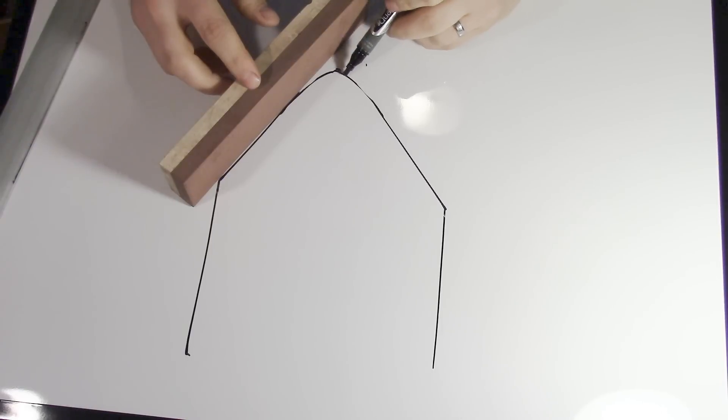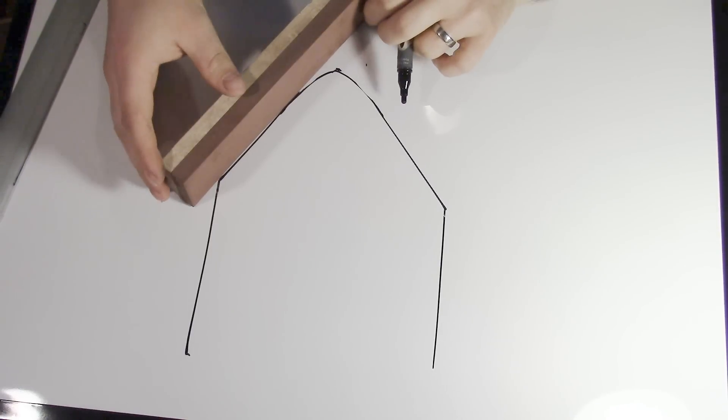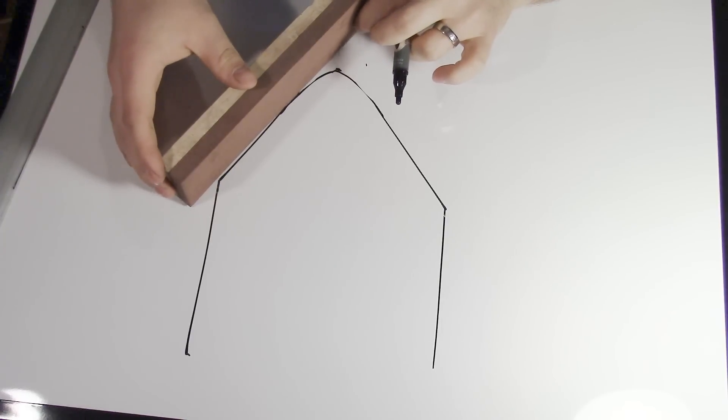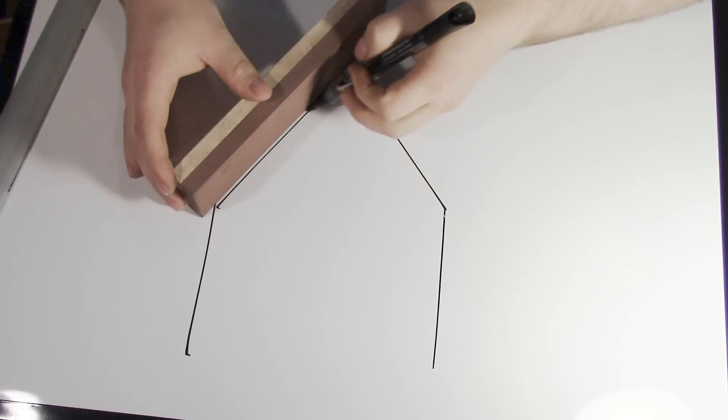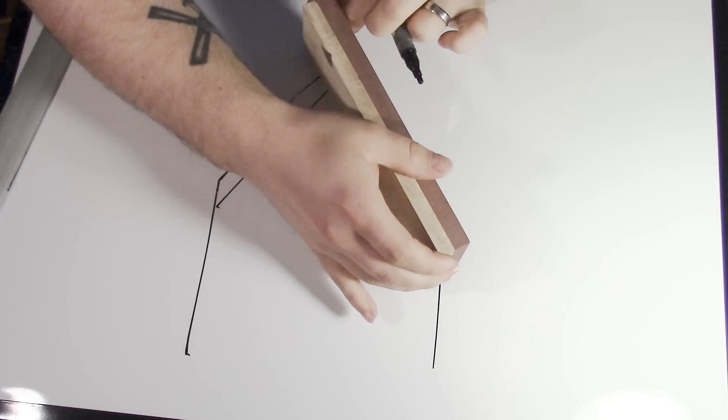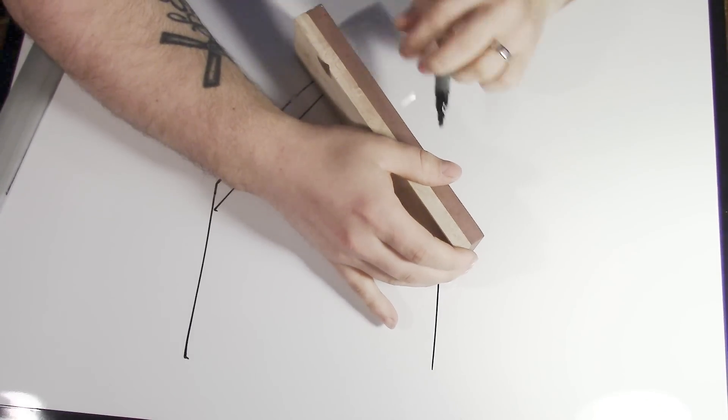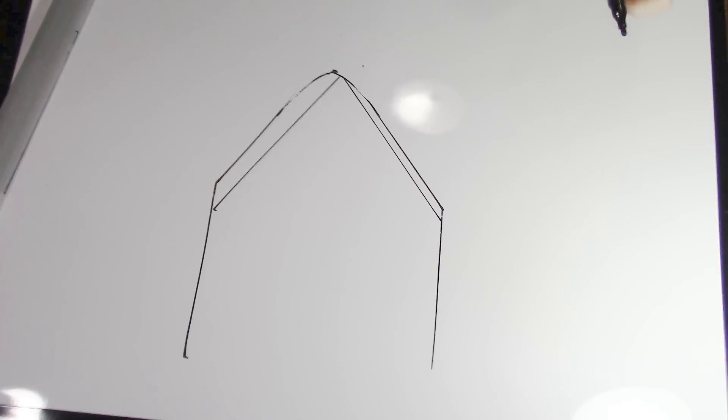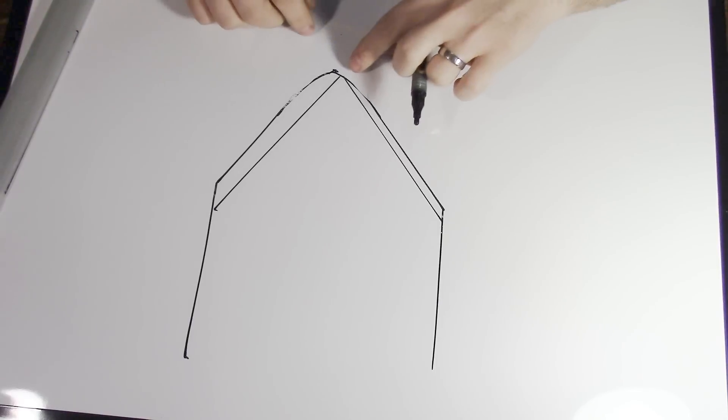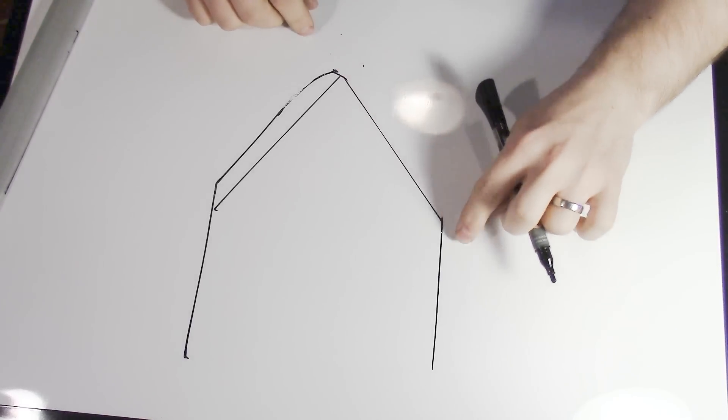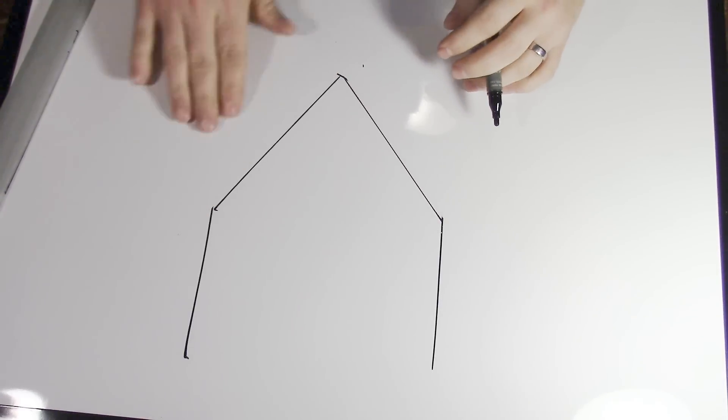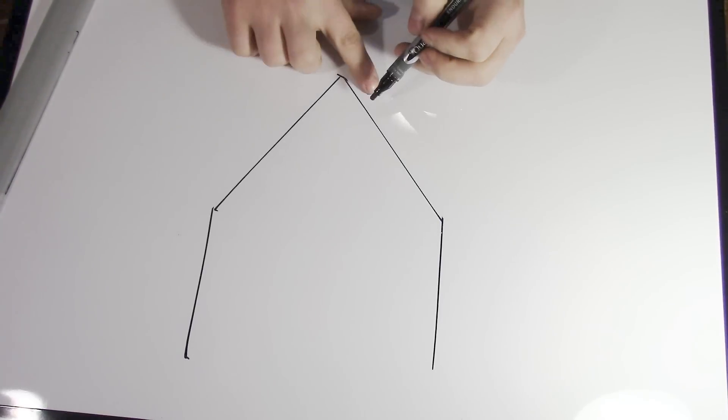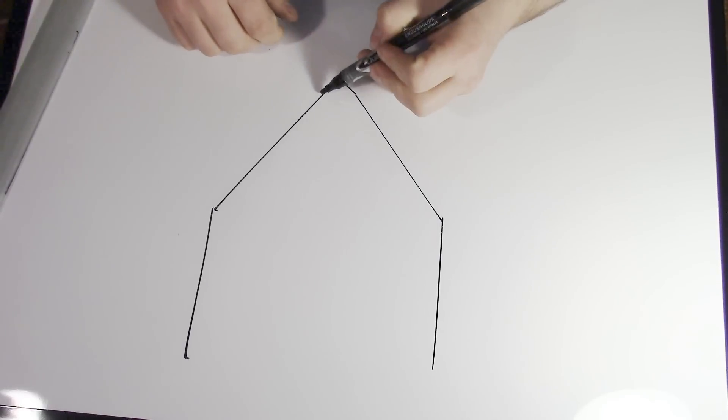So there are two options at this point for me. I can either remove all of the steel to create a true Scandi again, which takes a ton of work, or I can basically turn it to a sabre grind.